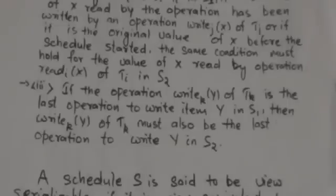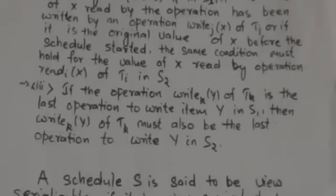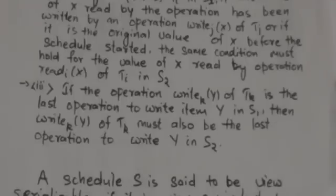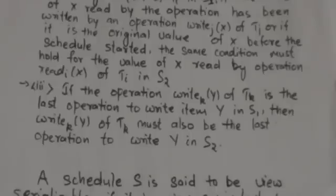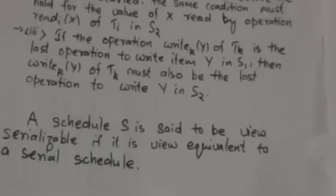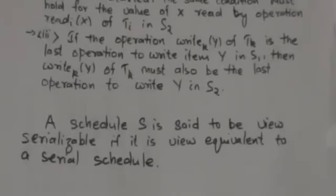The third condition is: if the operation write(Y) of transaction Tk is the last operation to write item Y in schedule S1, then write(Y) of transaction Tk must also be the last operation to write item Y in schedule S2. If these three conditions are satisfied, the two schedules S1 and S2 are said to be view equivalent. A schedule S is said to be view serializable if it is view equivalent to a serial schedule.